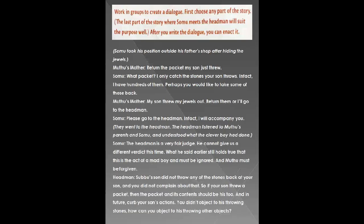Now we will come to the main part. I have taken this from the book — this is the question in your Broadway book. It says: 'Work in groups to create a dialogue. First choose any part of the story. The last part of the story where Somu meets the headman will suit the purpose well. After you write the dialogue you can enact it.' This is a group activity, but since lockdown is going on and we cannot go to school, we are going to do this individually at home. Hopefully when school opens we will enact it as a role play.